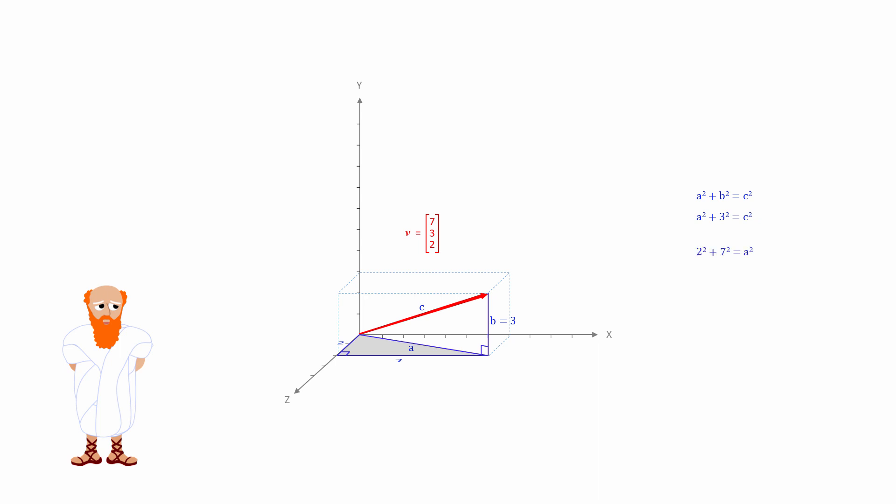So applying Pythagoras again, 2 squared plus 7 squared is equal to A squared. This can now be substituted back into the equation for the original triangle, which gives us a value for C squared, the square root of which is the value of C.